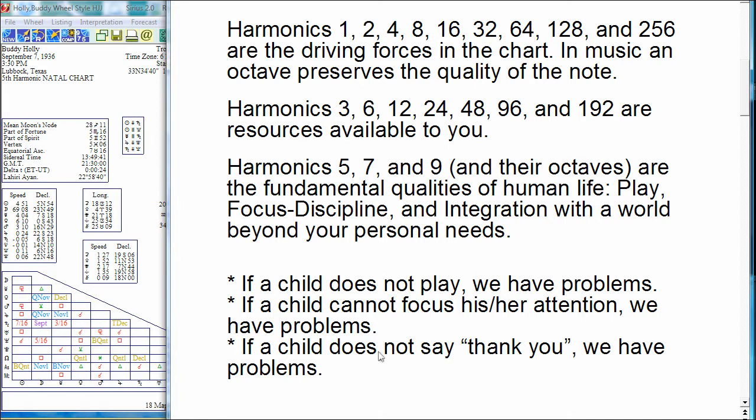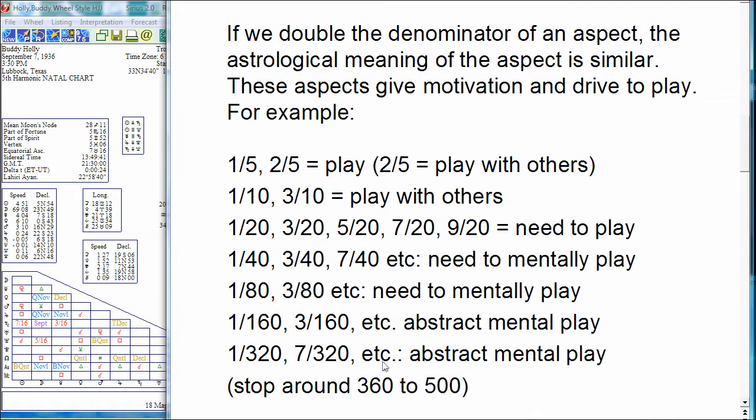So the child with a lot of septiles, this is true for adults too, but I think somehow with children it's maybe a clearer image, when they have a lot of these 7th harmonic aspects, they're able to be quiet, focused, and be more mature. And then the 9 gives a sense of participating in the world, integration with the world beyond your personal needs. And that's why we teach children to say thank you. And when a child doesn't say thank you, doesn't recognize they're part of a bigger world that they participate in and benefits them and becomes part of their lives, we have problems. So the 5, 7, and 9 give these basic, important, fundamental qualities that are important to the person.